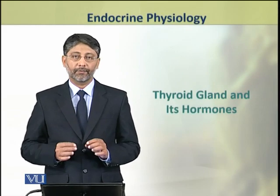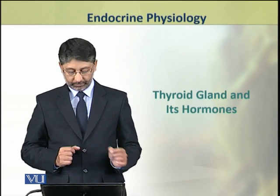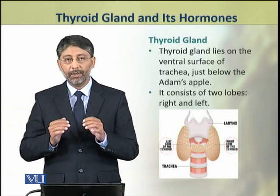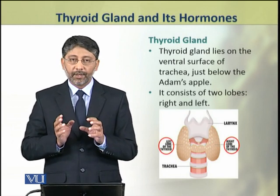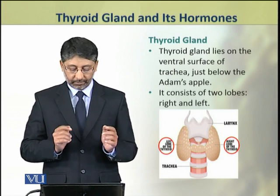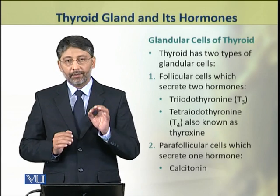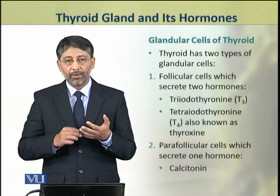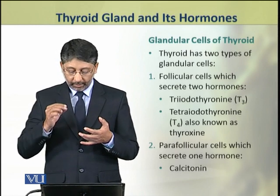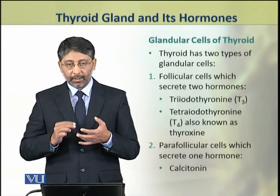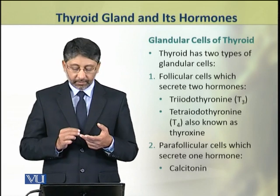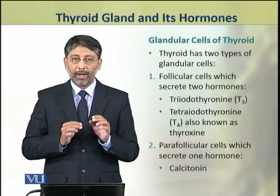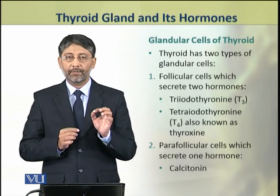In this topic we shall discuss the thyroid gland and its hormones. The thyroid gland lies on the ventral surface of the trachea, just below the Adam's apple. It consists of two lobes: right and left lobes. There are two types of glandular cells: follicular cells, which secrete thyroxine (T4) and triiodothyronine (T3), and parafollicular cells, which produce calcitonin.